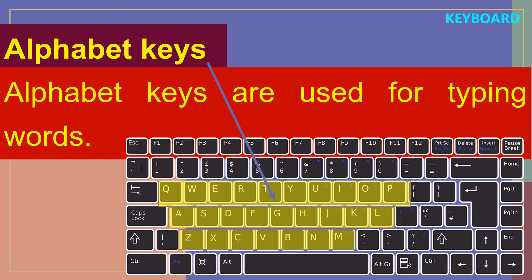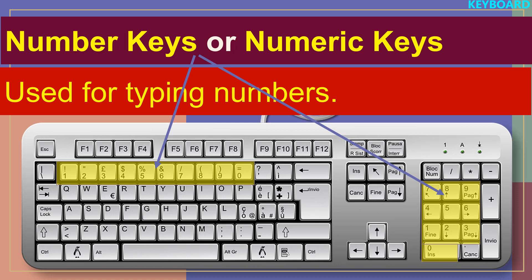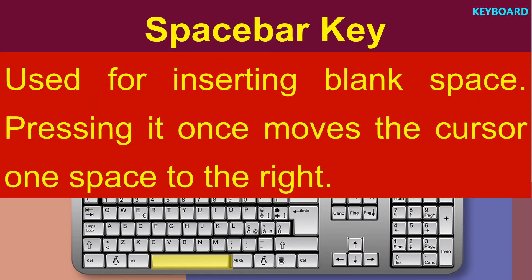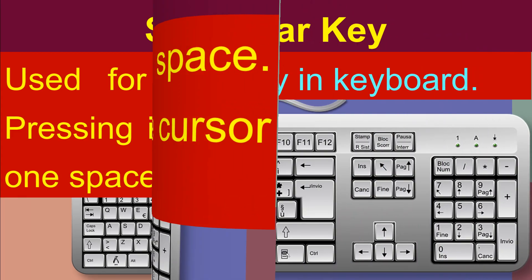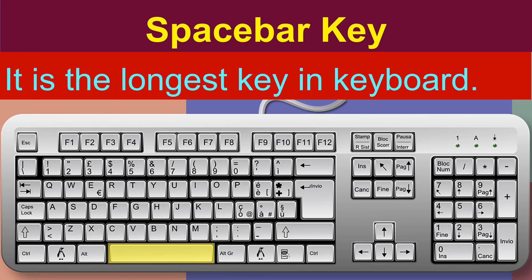Alphabet keys are used for typing words. Number keys, or numeric keys, are used for typing numbers. The spacebar key is used for inserting a blank space — it moves the cursor when you need space to write. It is the longest key on the keyboard.